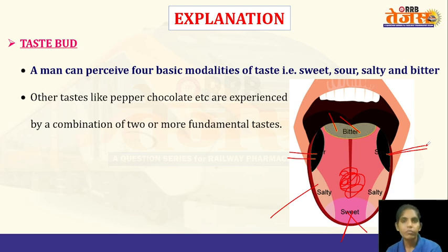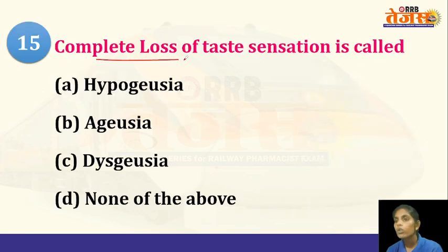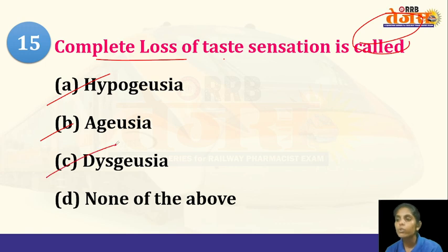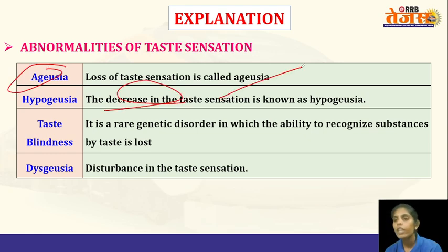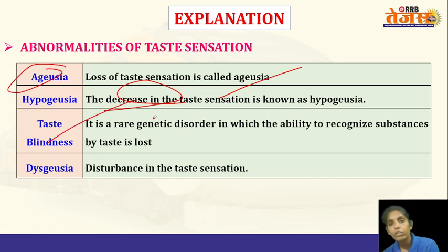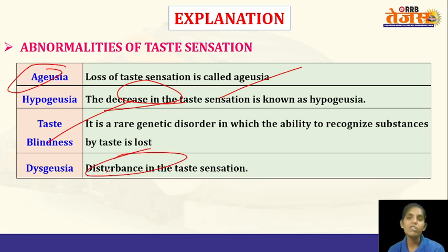Next: complete loss of taste sensation is called — hypogeusia, ageusia, dysgeusia, or none of the above? The answer is ageusia. Hypogeusia is a decrease in taste sensation, a genetic disorder in which the ability to recognize food taste is lost. Dysgeusia means a disturbance in taste sensation.